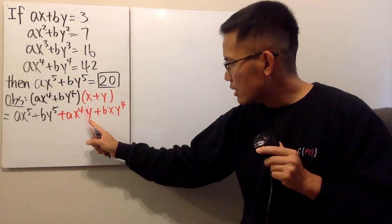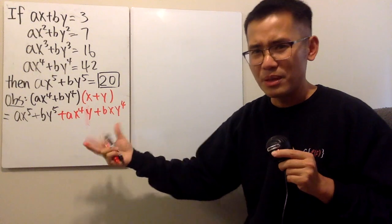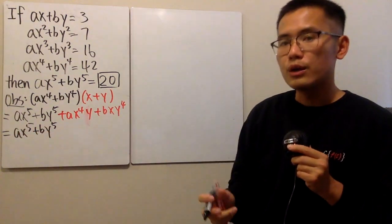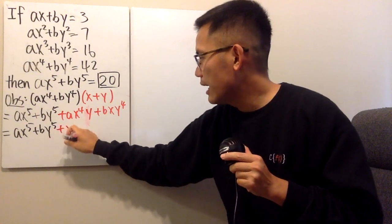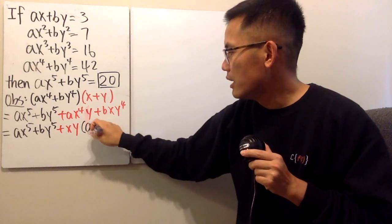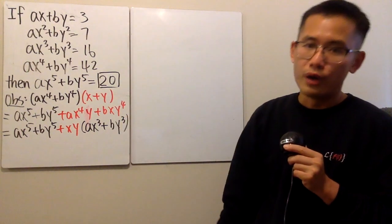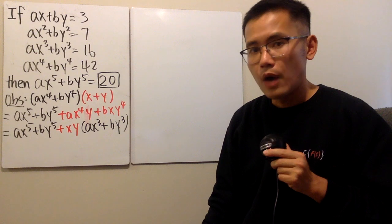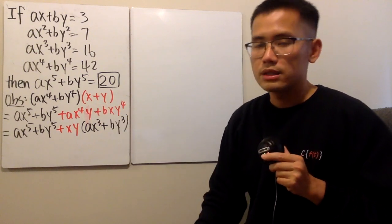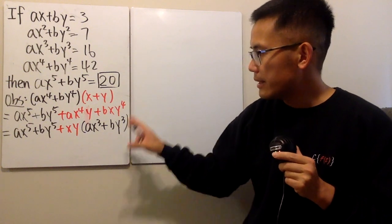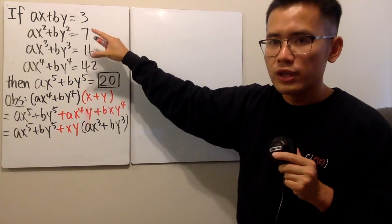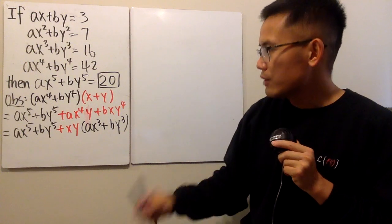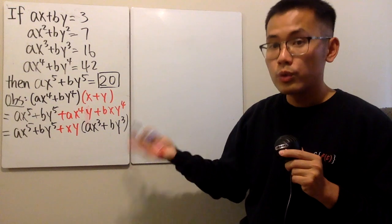That leftover term has both x and y, so we can factor out xy to get: ax⁵ + by⁵ = (ax⁴ + by⁴)(x + y) − xy·(ax³ + by³). This is great because we already know ax³ + by³ = 16. However, we don't yet know x + y or xy, but we're making good progress — we can find them from the other equations.